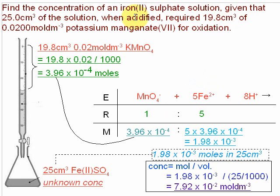Carrying on, given that 25 cm³ of the solution when acidified required 19.8 cm³ of this concentration potassium manganate for oxidation. So quite a lot of information in the question.